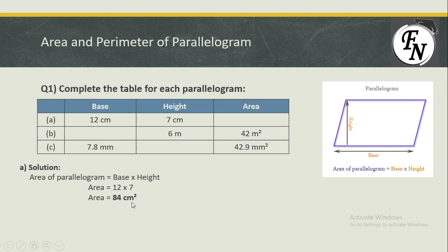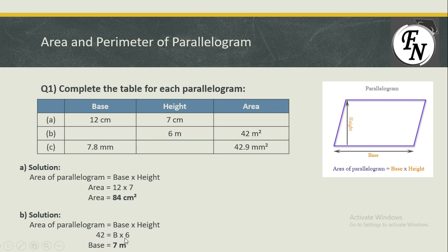In the second part, the area is given but the base is missing. Substituting the values: area of parallelogram equals base times height, so 42 equals b times 6. Since 6 is multiplying on the right side, it divides on the left, giving 42 divided by 6, which is 7 meters.